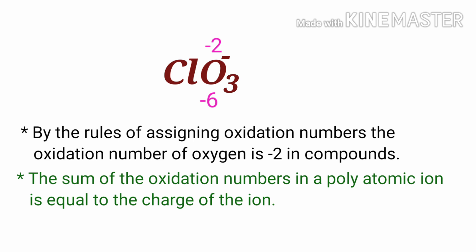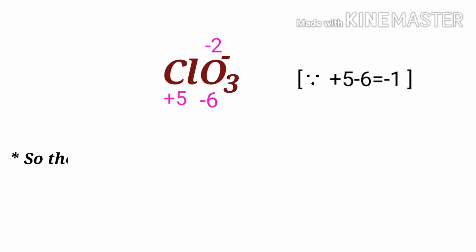So the number under Cl must be plus 5. Therefore, the oxidation number of chlorine in chlorate ion is plus 5.